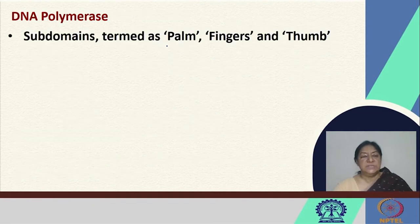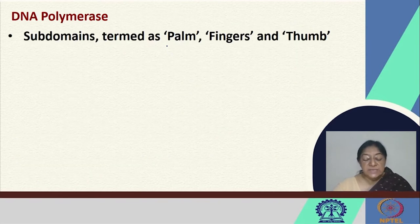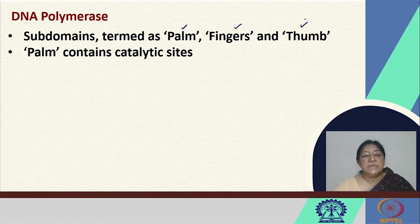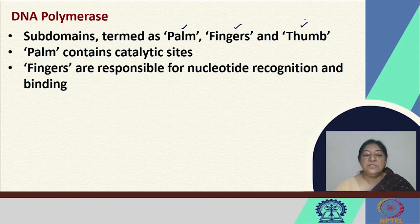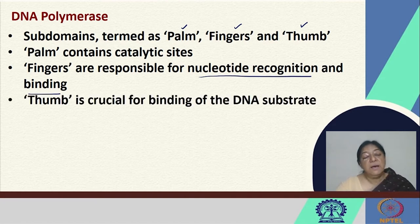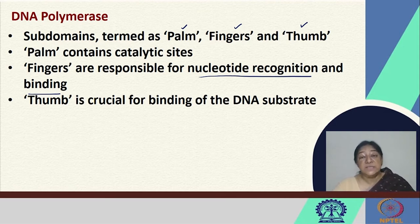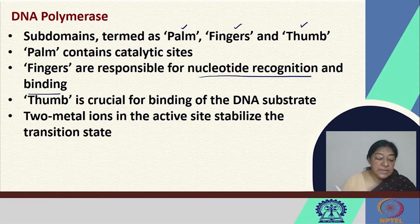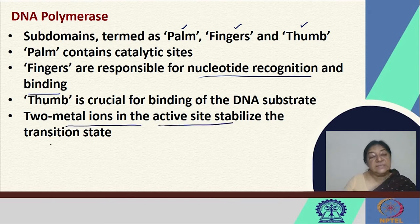The structure of DNA polymerase has subdomains termed the palm, the fingers, and the thumb. The palm contains the catalytic sites. The fingers are responsible for nucleotide recognition and binding. The thumb is crucial for binding of the DNA substrate. There are also two metal ions in the active site that stabilize the transition state, as we learned about in enzyme catalysis.